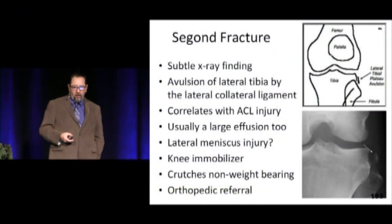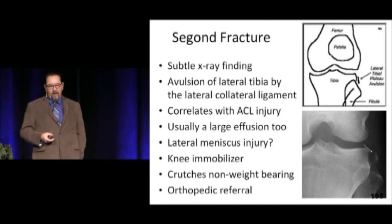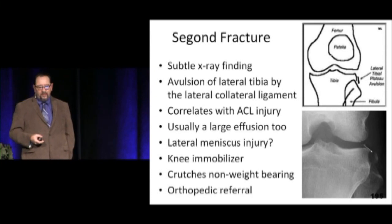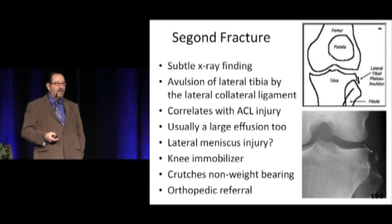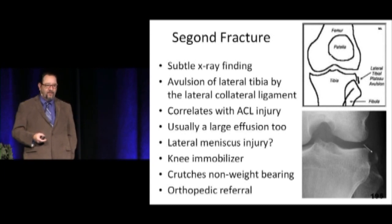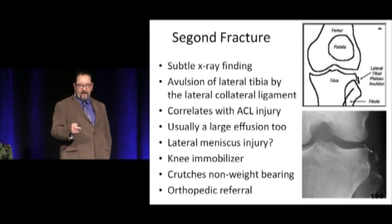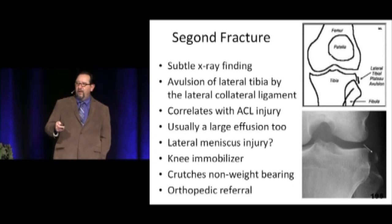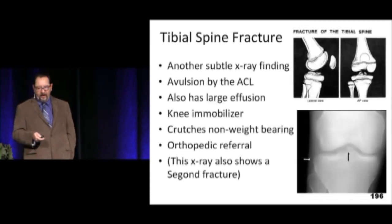Here's an image showing the Segond fracture — it looks like a nothing fracture, but it's an avulsion fracture caused by the lateral collateral ligament. When that avulsion occurs, it almost always means the ACL is out. Big effusion as well. Orthopedic referral is needed — they're probably going to need something done either arthroscopically or open.